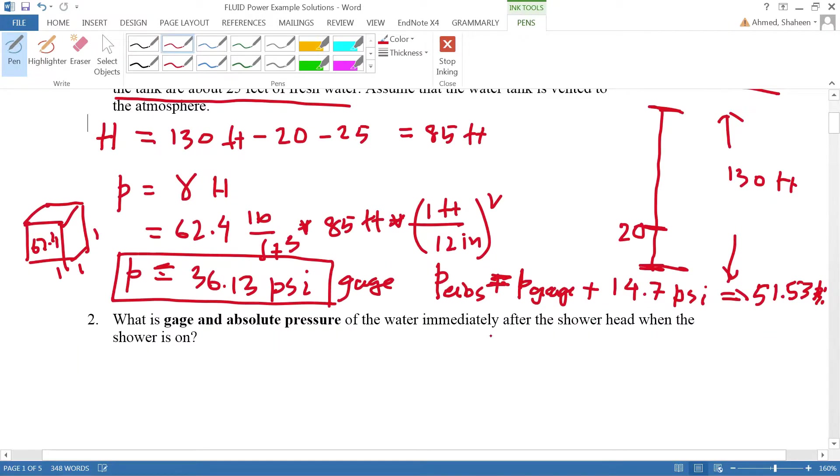The next part asks: what is the gauge and absolute pressure of water immediately after the shower head when the shower is on? If you have the shower with water coming out, immediately after the shower head the water is in the atmosphere.